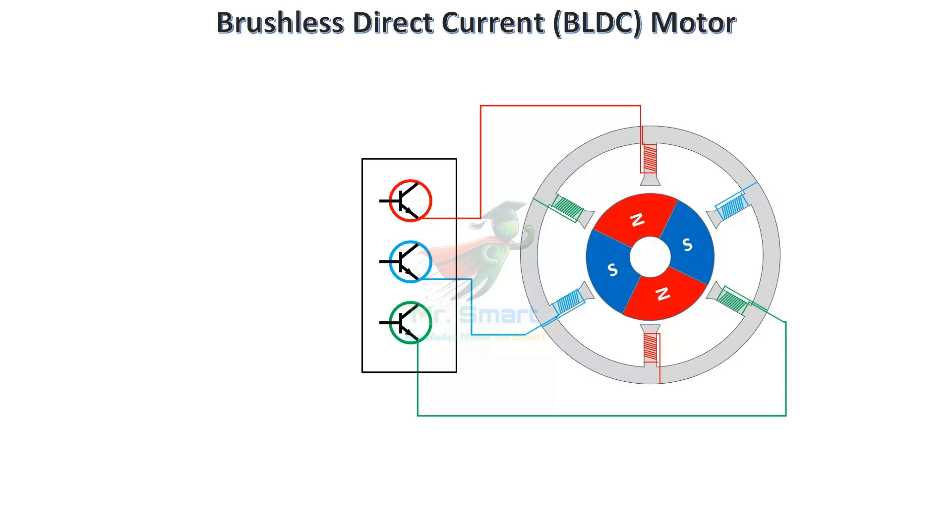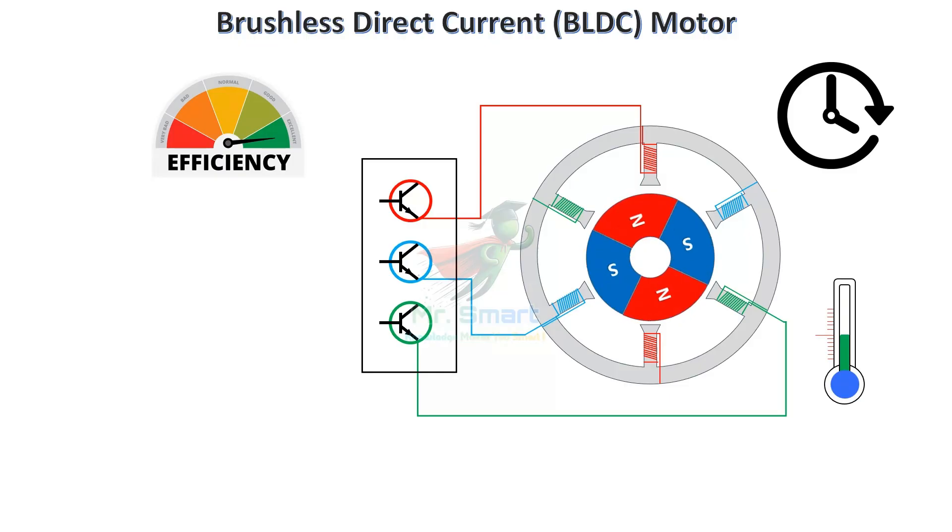Not just that, BLDC motors also offer you higher efficiency, up to 90% energy conversion. Longer lifespan, no brushes mean less wear and tear. Low heat generation reduces energy loss and increases performance. Silent operation, no mechanical friction, so no noise.